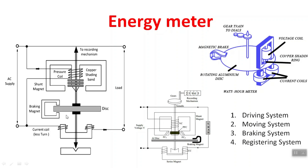The second part is the moving system, which consists of a rotating aluminum disk. The third part is the braking system, which has a braking magnet — a permanent magnet. The fourth part is the registering system.